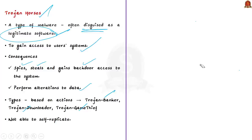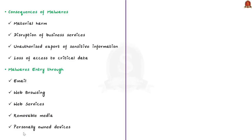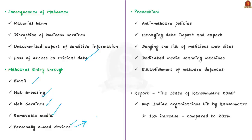Many other types of malwares are also used by cyber criminals. The consequences include material harm such as disruption of business services, unauthorized export of sensitive information, and loss of access to critical data. Malware can enter through email, web browsing, web services, removable media, and personally owned devices like smartphones connected via USB. It can be avoided by developing and implementing anti-malware practices, managing data import and export, denying malicious websites access, using dedicated media scanning machines, and establishing malware defenses.